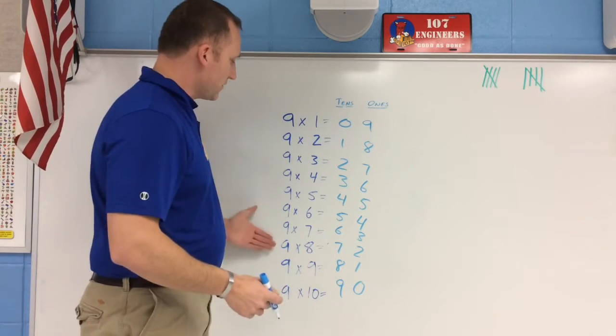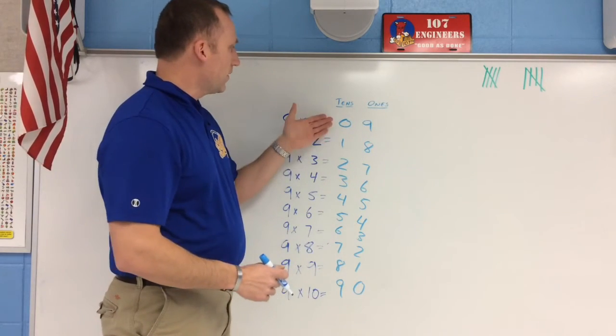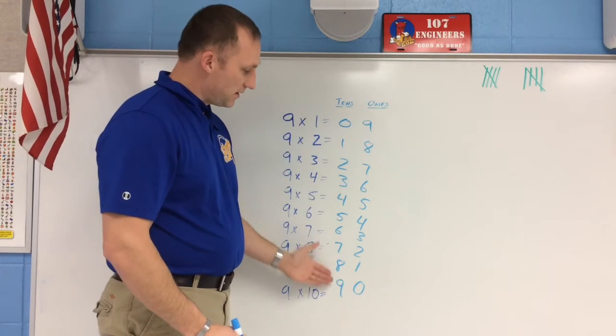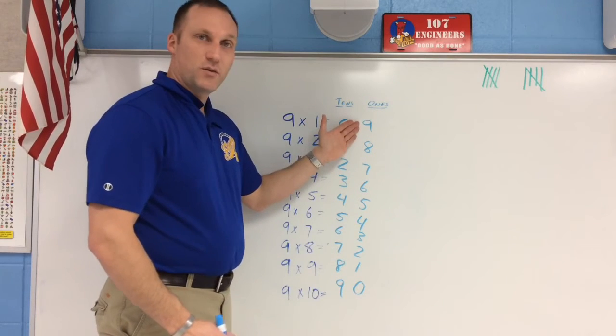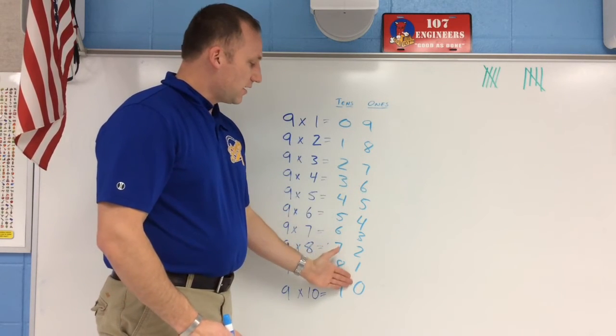You can see we get all the right answers when it comes to our multiplication problems by going in the tens place starting with 0 all the way to 9, and going in the ones place starting with 9 going all the way down to 0.